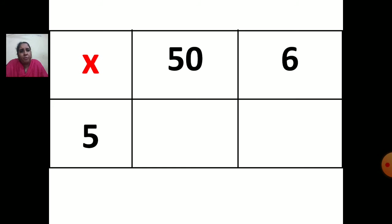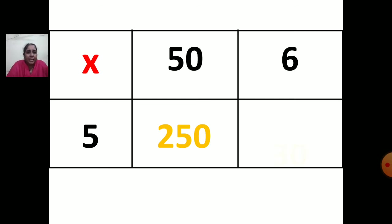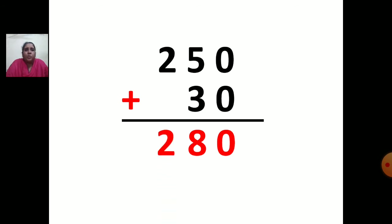So first we will multiply 50 by 5. Say the table of 5 — 5 fives are 25 — and place 1 zero after 25, giving 250. Now multiply 6 by 5 — 6 fives are 30. So the answers are 250 and 30. Now add these numbers: starting from the units place, 0 plus 0 is 0; 5 plus 3 is 8; bring the 2 down. So your answer is 280.